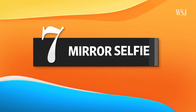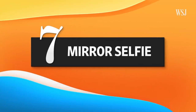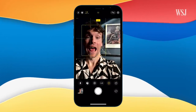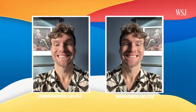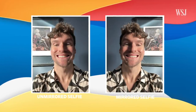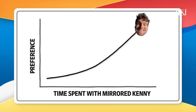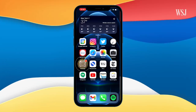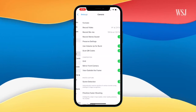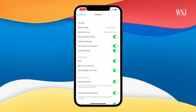Tip seven: the mirror selfie. When you're taking a selfie, you see your mirrored self in the viewfinder and you become familiar with that person. But then the finished picture is this unmirrored other guy. I am not a fan of unmirrored Kenny — I kind of hate him, and he's not who I'm used to seeing. Mirrored Kenny, on the other hand, who I'm familiar with — I'm a fan. To turn this on, go to Settings, Camera, and under Composition, toggle on Mirror Front Camera.